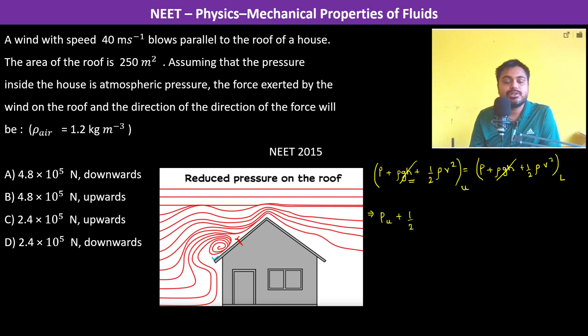So half into the velocity which is upper. So rho air is 1.2 kg per meter cube and the velocity was 40 meters per second. So this is 40 into 40 meters squared per second squared.